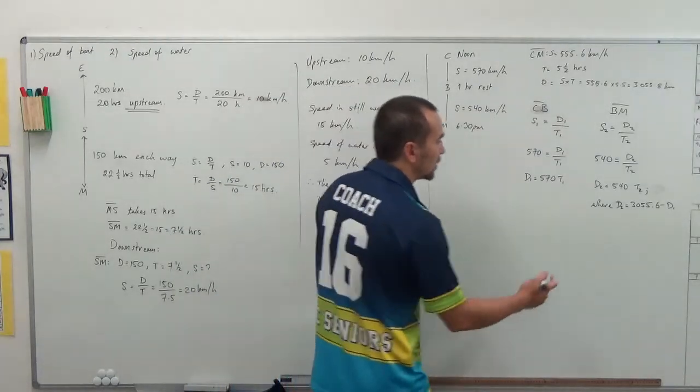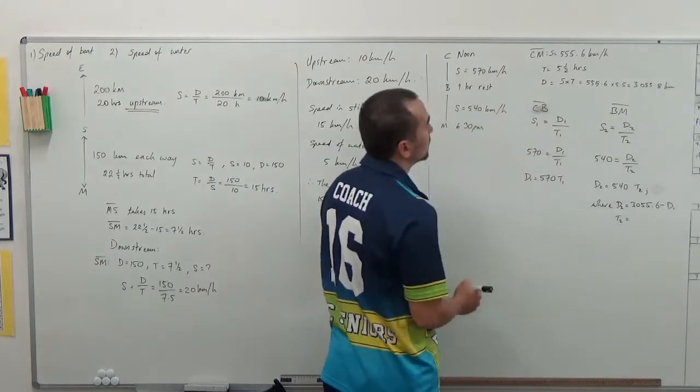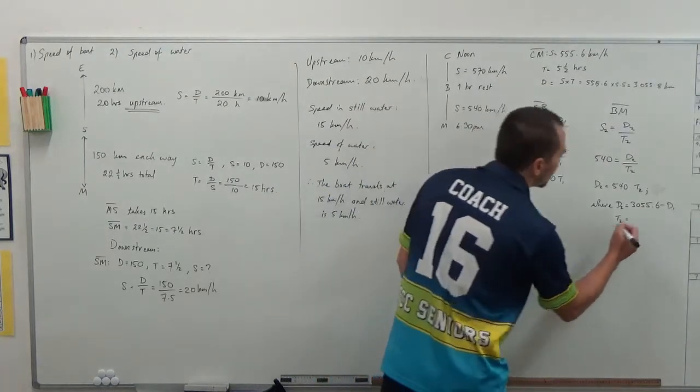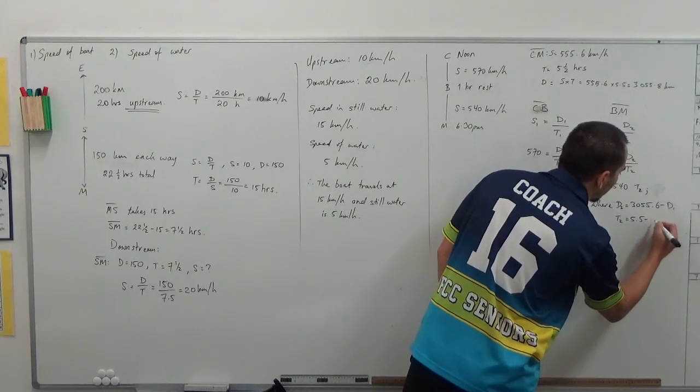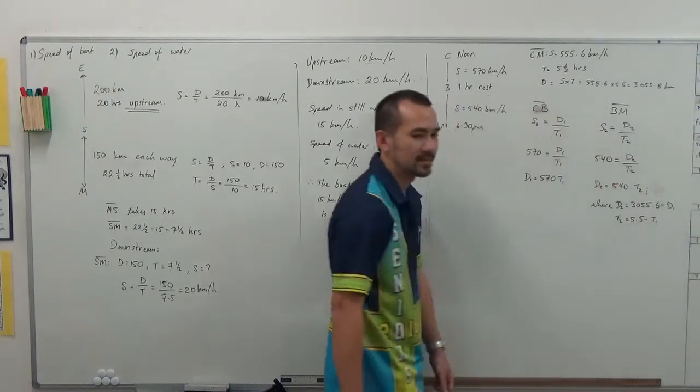And 55.6 take away D1. And likewise with the second time, it would be 5.5 hours, take away T1.